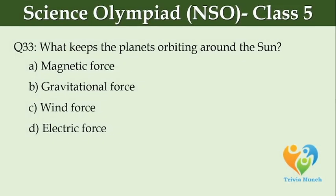What keeps the planets orbiting around the sun? Option A: magnetic force, Option B: gravitational force, Option C: wind force, Option D: electromagnetic force.